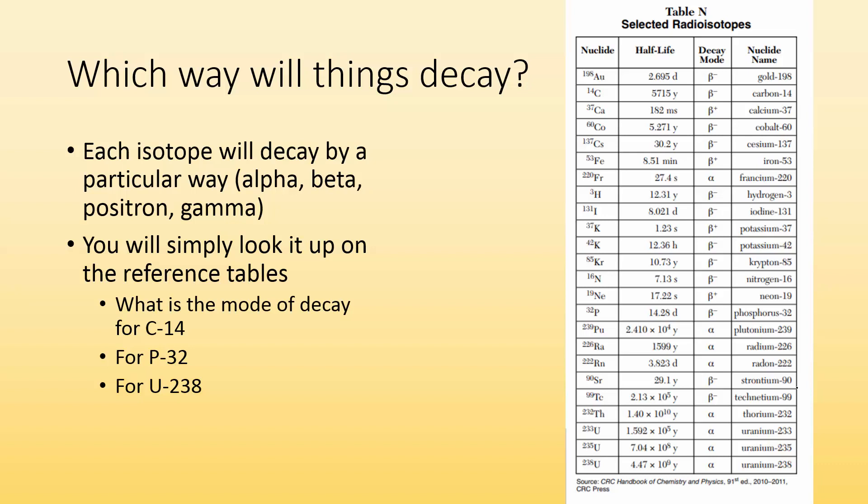Which way will things decay? If I've got all these different isotopes, how do I know how it decays? Each isotope will decay in a particular way - either alpha, beta, positron, or gamma radiation. We look it up using our reference tables. Go to table N. Carbon-14 - I found it. It's got a half-life of 5,715 years, and its decay mode is beta particle.